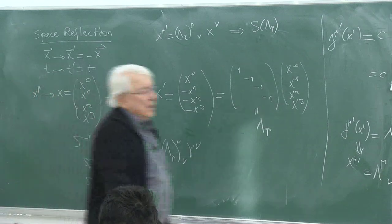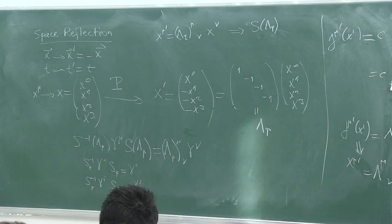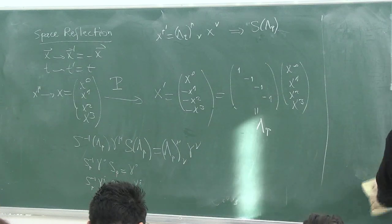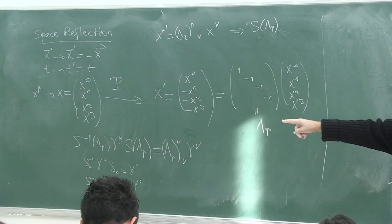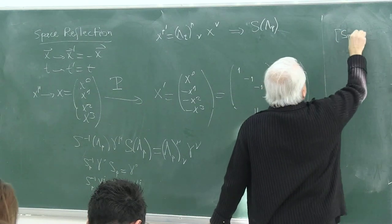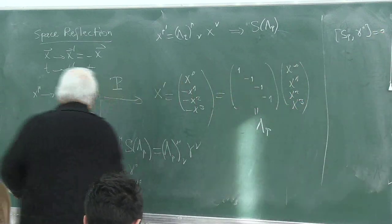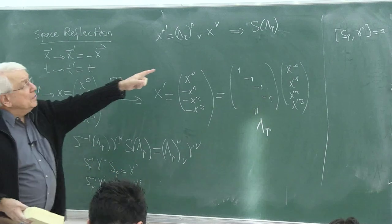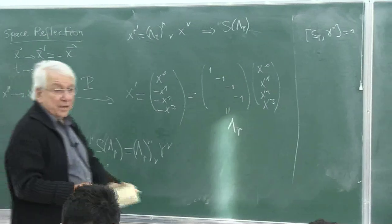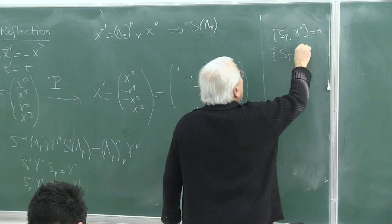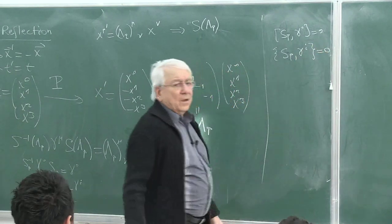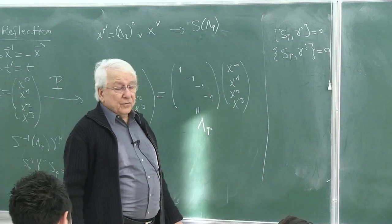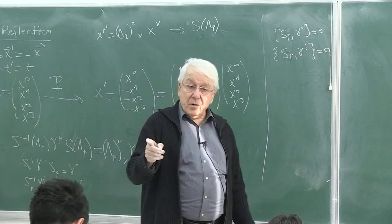Rewriting in equivalent form: these give us two conditions on S_P. The first condition gives the commutator [S_P, gamma-zero] equals zero. The second gives the anti-commutator {S_P, gamma-i} equals zero — S_P anti-commutes with the space gamma matrices and commutes with gamma-zero. The matrix satisfying this relationship is gamma-zero times a constant. We will continue next week, but that is the parity transformation in spinor space.